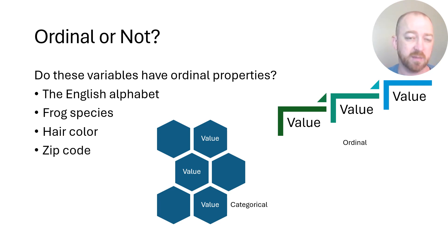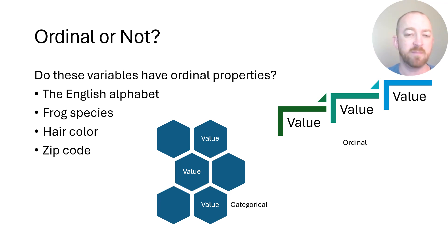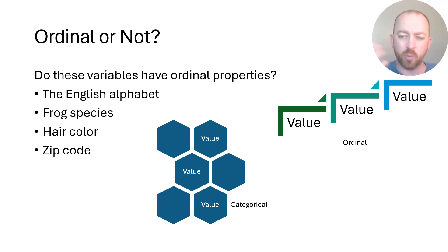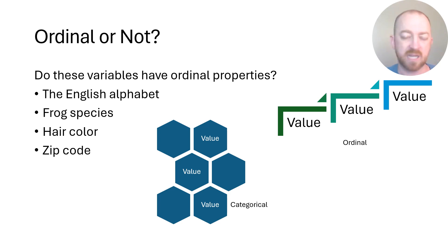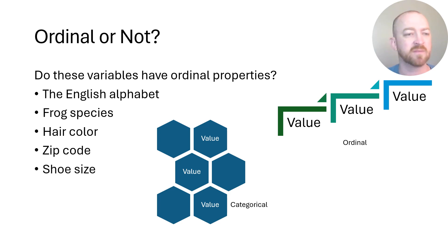Zip code is an interesting one. What is the purpose that a zip code serves? My university is at zip code 60605 — does that mean it came before 60606, or that it's better than 60606, or larger? Not necessarily. The way we use zip code merely distinguishes from other zip codes. I grew up in zip code 80909 — does that mean we outrank 60605? No it doesn't. So the way we use zip code is inherently categorical, unless you wanted to use it in terms of chronology, but there's really no reason for that.